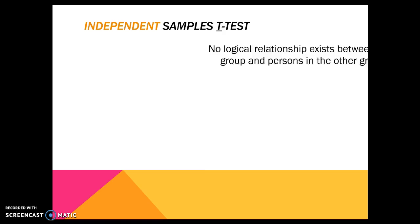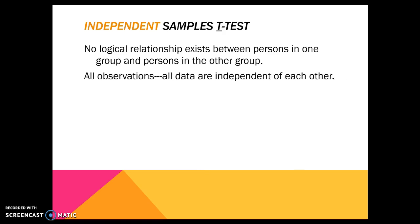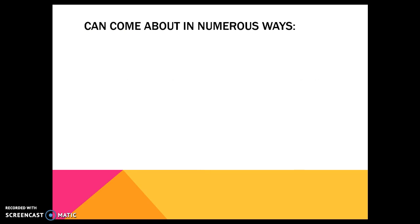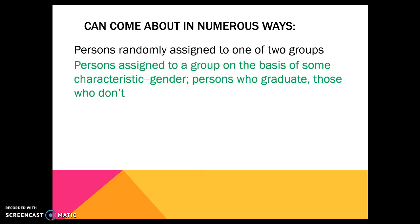The independent samples t-test is the most commonly used t-test and the one we're going to focus on the most. This occurs when there is no logical relationship between the groups — you're either in one group or the other, you can't be in both, and all groups are completely independent from each other. We could randomly assign people to group one or group two, or assign them based on some characteristic: graduates vs. non-graduates, male vs. female, Colorado vs. California.